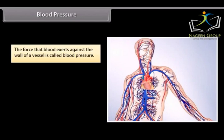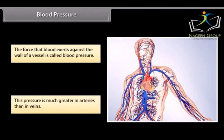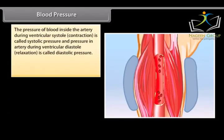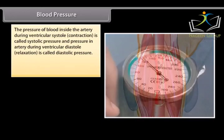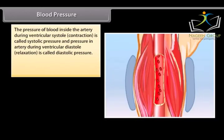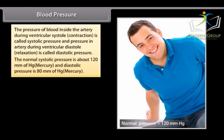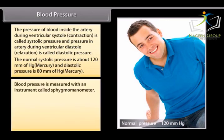Blood pressure: The force that blood exerts against the wall of a vessel is called blood pressure. This pressure is much greater in arteries than in veins. The pressure of blood inside the artery during ventricular systole (contraction) is called systolic pressure. The normal systolic pressure is about 120 mm of mercury and diastolic pressure is 80 mm of mercury. Blood pressure is measured with an instrument called sphygmomanometer.